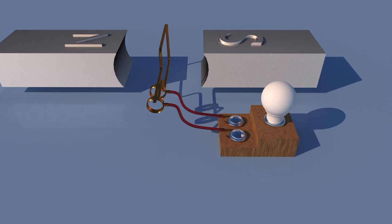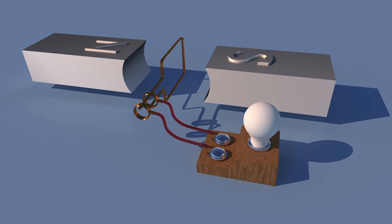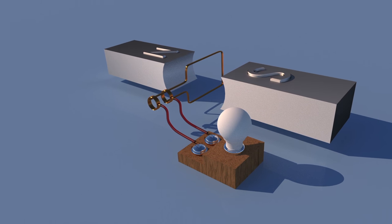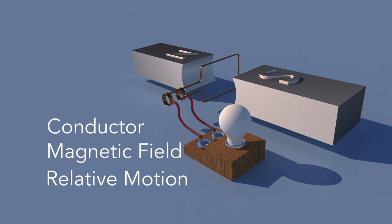The generator produces voltage by means of induction, a process that you may already be familiar with. To review briefly, a voltage will be induced when three things are present: a conductor, a magnetic field, and relative motion between the conductor and the magnetic field.